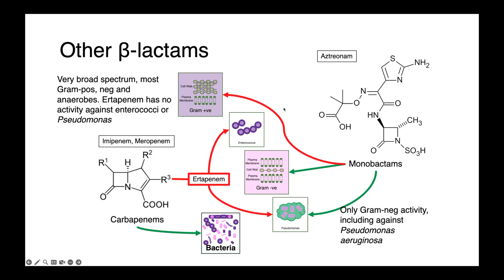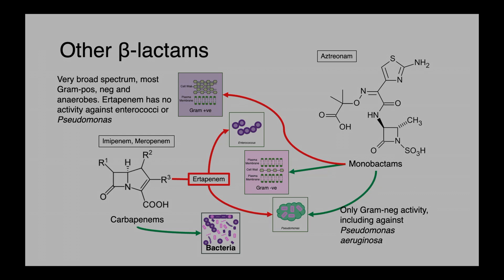Our final class are the monobactams, of which aztreonam is our primary example. Aztreonam has no activity against gram-positive bacteria and is probably best known for its anti-pseudomonal activity.